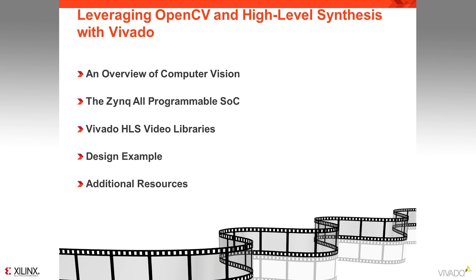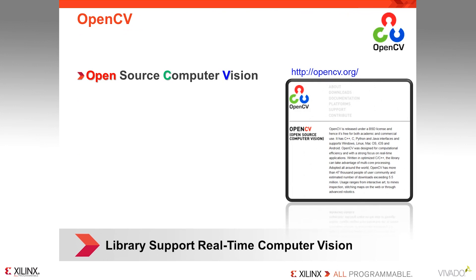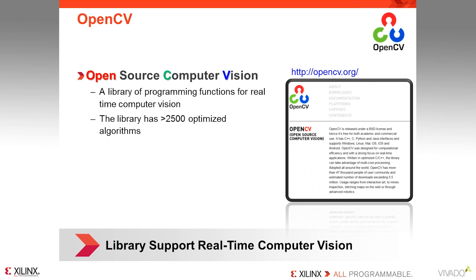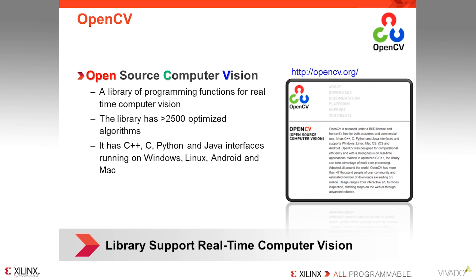First, let's have a quick overview of the OpenCV libraries. OpenCV is an acronym for Open Source Computer Vision. It is a library of programming functions for performing real-time computer vision. Available from OpenCV.org, the library provides over 2,500 functions in C, C++, Python, and Java, and for multiple computer operating environments. A testament to the success of the OpenCV libraries is the fact that they have surpassed 5 million downloads and have nearly 50,000 users in the OpenCV user group.